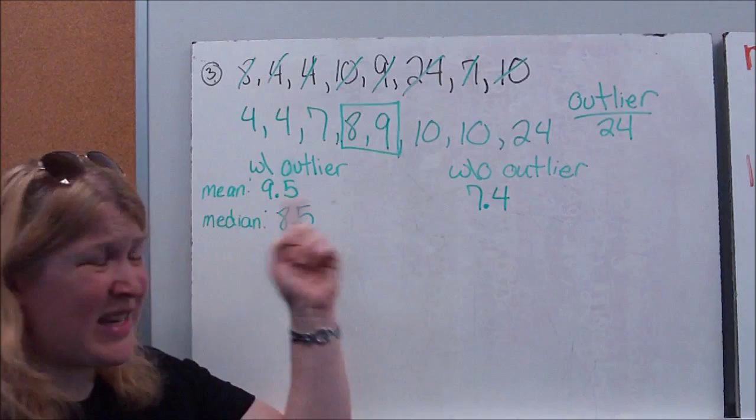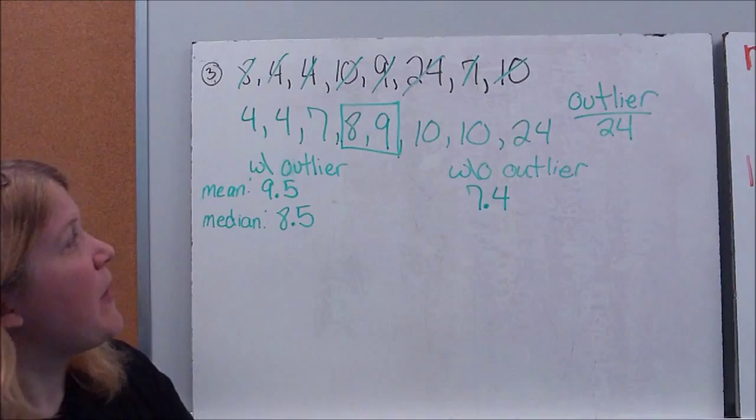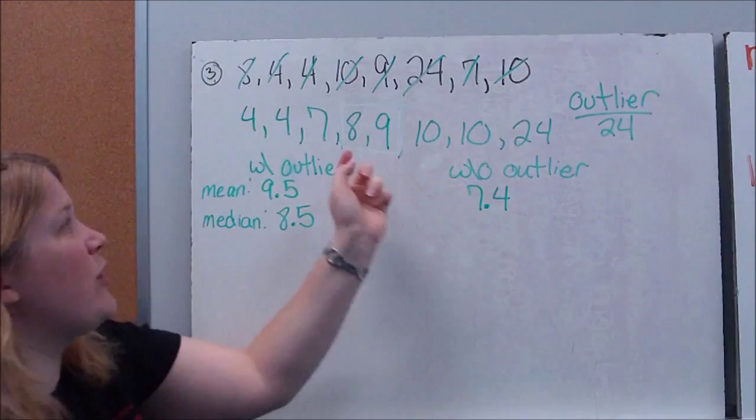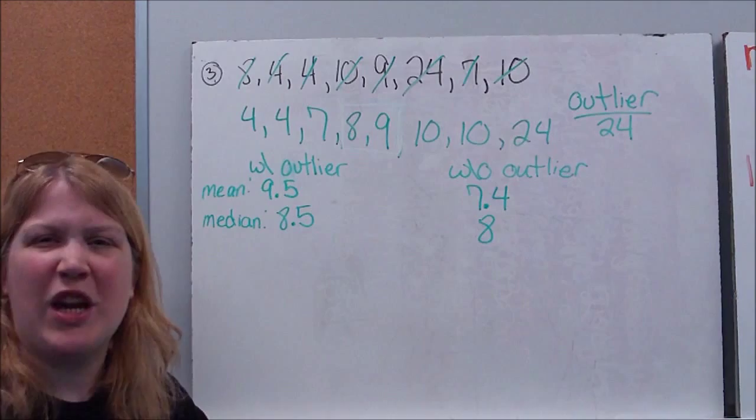So now let's ignore our outlier and calculate our median. Without our outlier, I only have 7 data points because I'm ignoring the outlier, which means the direct middle is 8. So you'll notice my median changed, but not a lot. The median is still pretty close with or without the outlier.